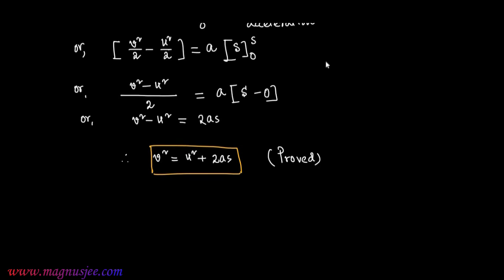Hence, the equation v² = u² + 2a·s is proved using the concept of integration. The square of velocity v² equals the square of initial velocity u² plus 2a·s, where a is the uniform acceleration of the body and s is the total displacement of the body during its motion.